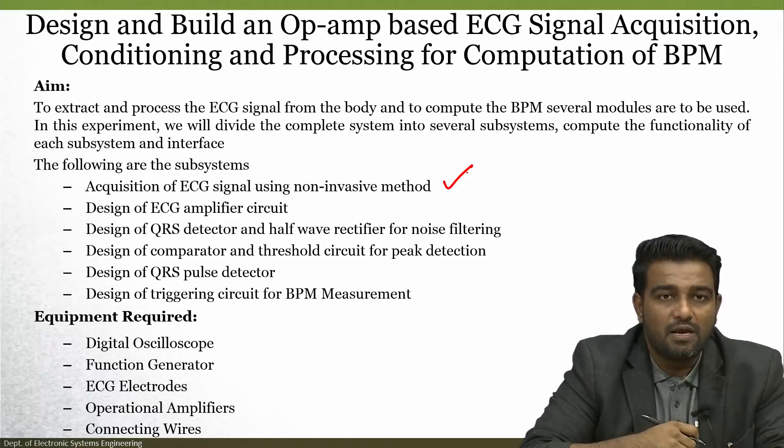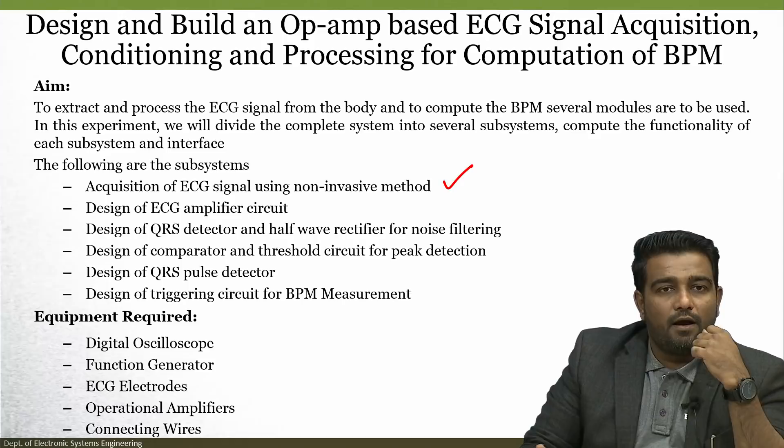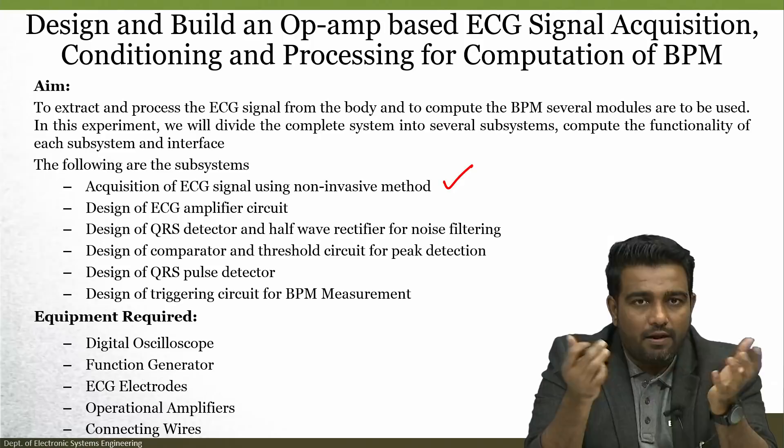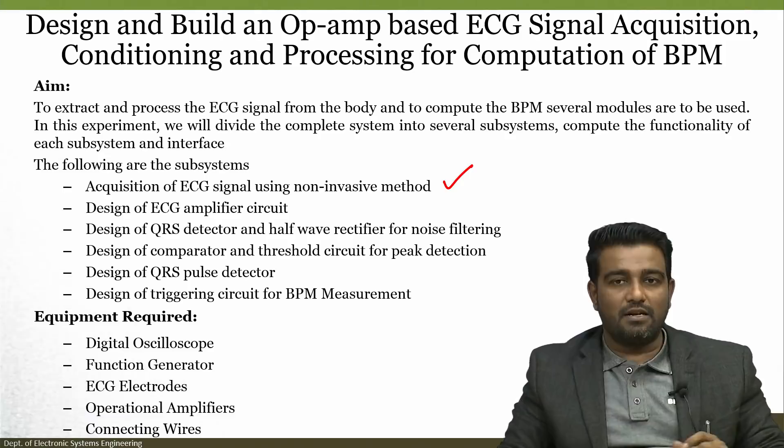The second system is how to design an ECG amplifier circuit. The third system is the designing of the QRS and half-wave rectifier for noise filtering. Then we will look at how to design a comparator and threshold circuit for peak detection, followed by a QRS pulse detector, followed by a triggering circuit for BPM measurement. The equipment required includes a digital oscilloscope, functional connector, ECG electrodes, operational amplifiers and connecting wires.